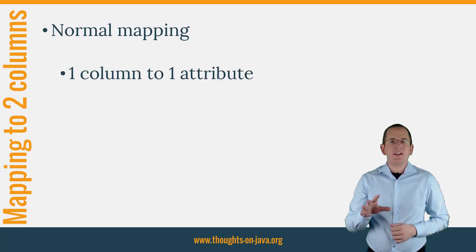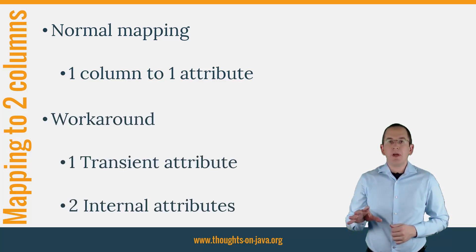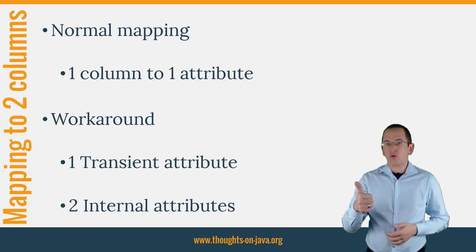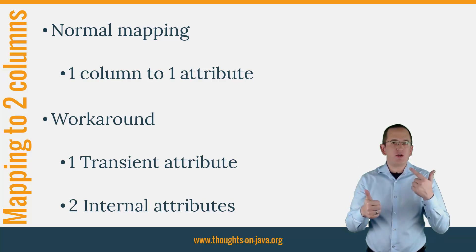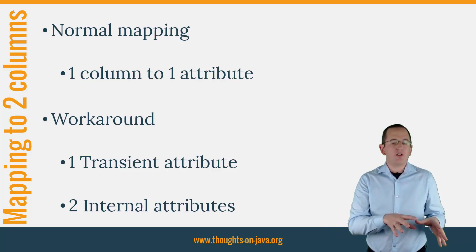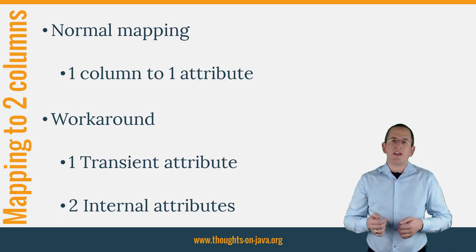Normally, JPA and Hibernate map each entity attribute to one column in a database table. Mapping an attribute to two columns requires a small workaround that uses one transient and two internal attributes. Your domain model uses the transient attribute, which gets mapped to the two internal attributes. Hibernate then maps the internal attributes to the database table.